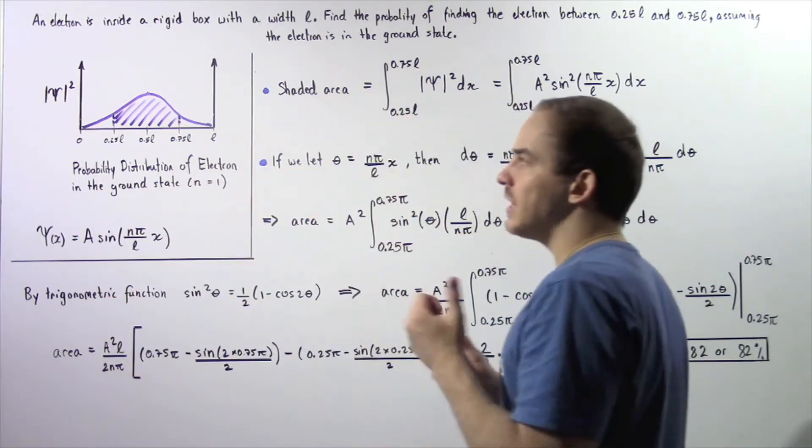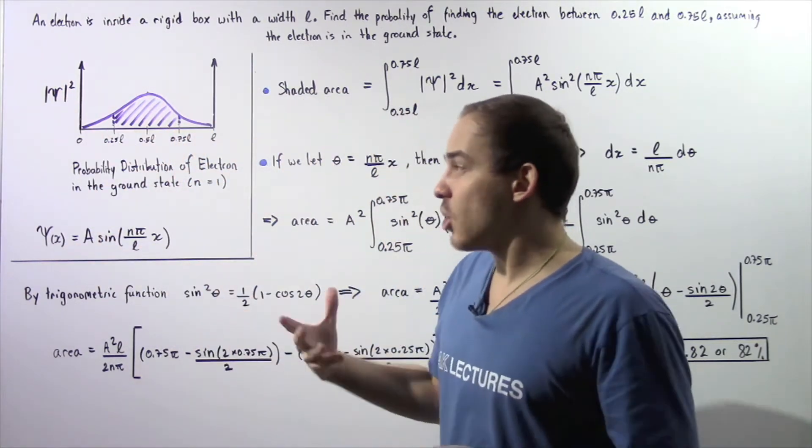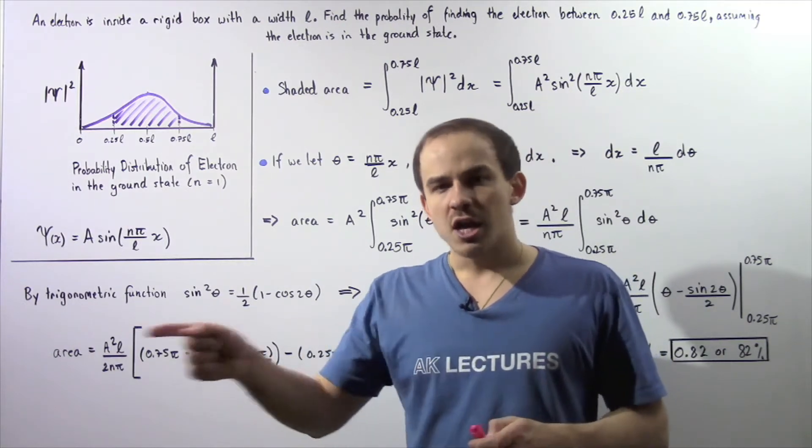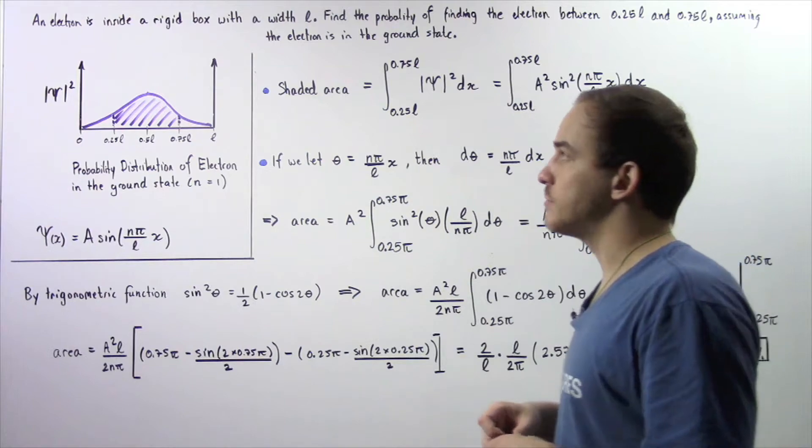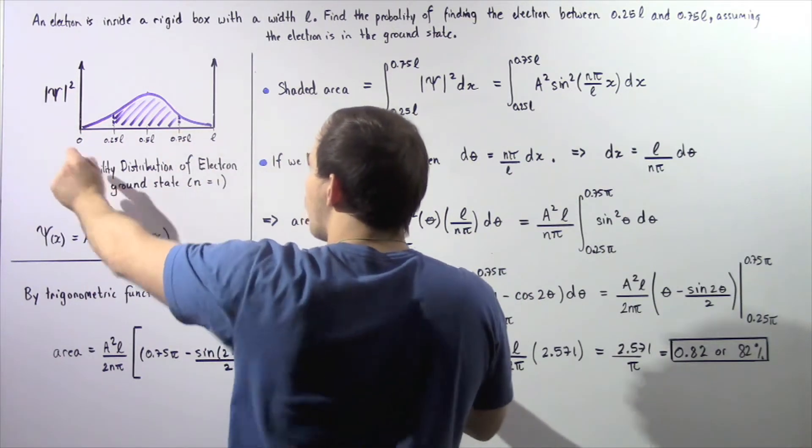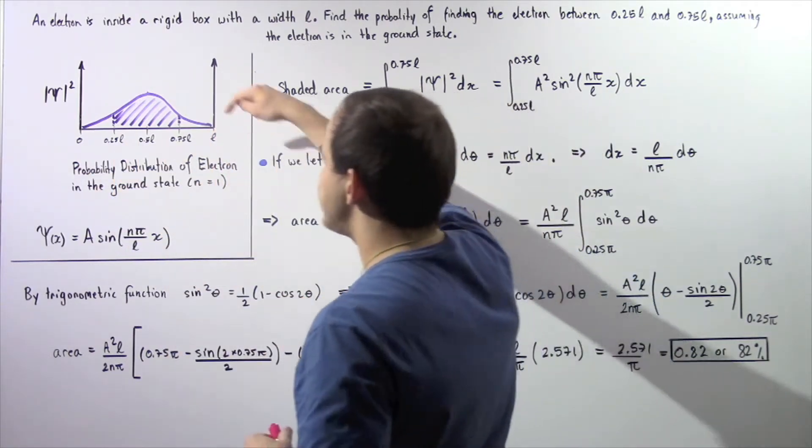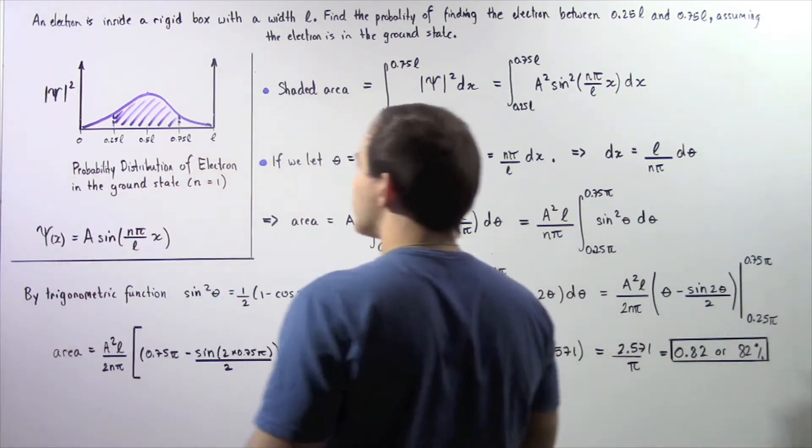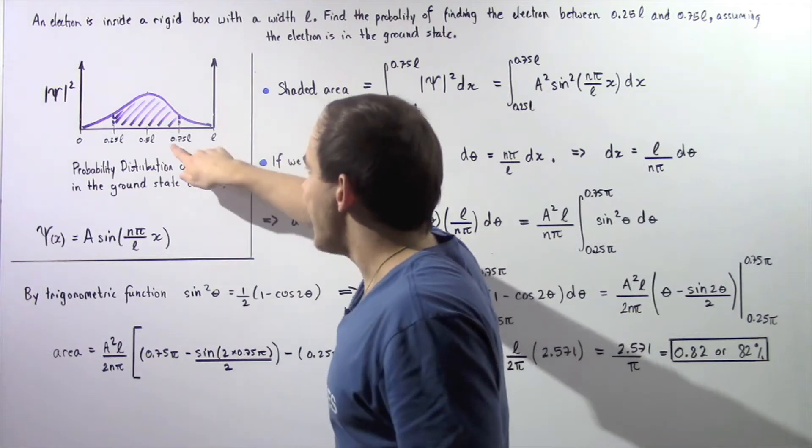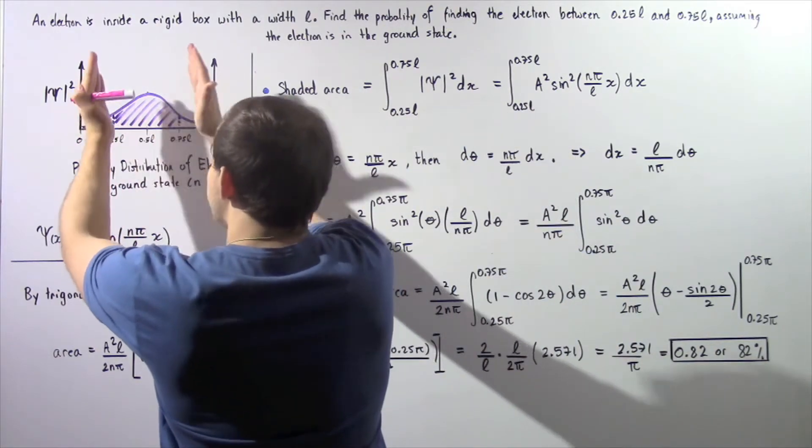Now let's begin by plotting on the y-axis our square of the absolute value of our wave function, which is also known as the probability density. The x-axis is the position of our electron along our bottom portion of the rigid box. The left corner is x equals 0, the right corner is x equals L, and this entire width of our box is equal to L. We want to focus on the point 0.25L and 0.75L and find the probability of finding our electron within this region.